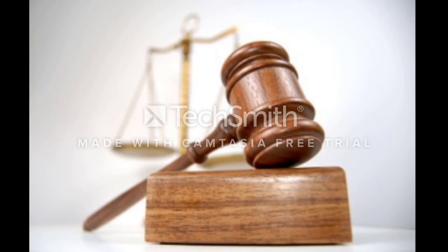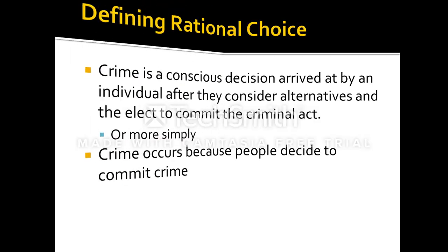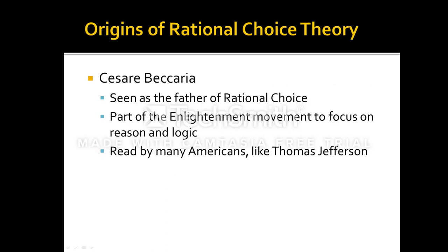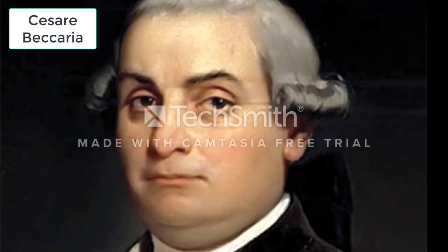How would we define it? Well, the Rational Choice Theory says that crime is a conscious decision arrived at by an individual after they consider alternatives and elect to commit a criminal act. Or, if we put it in the simplest possible way, crime occurs because people decide to commit crime.